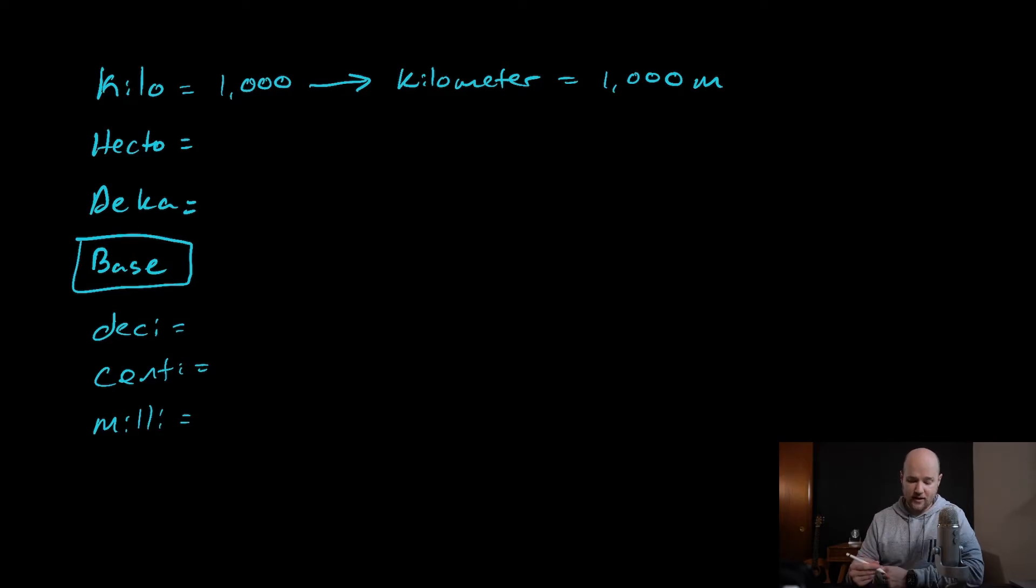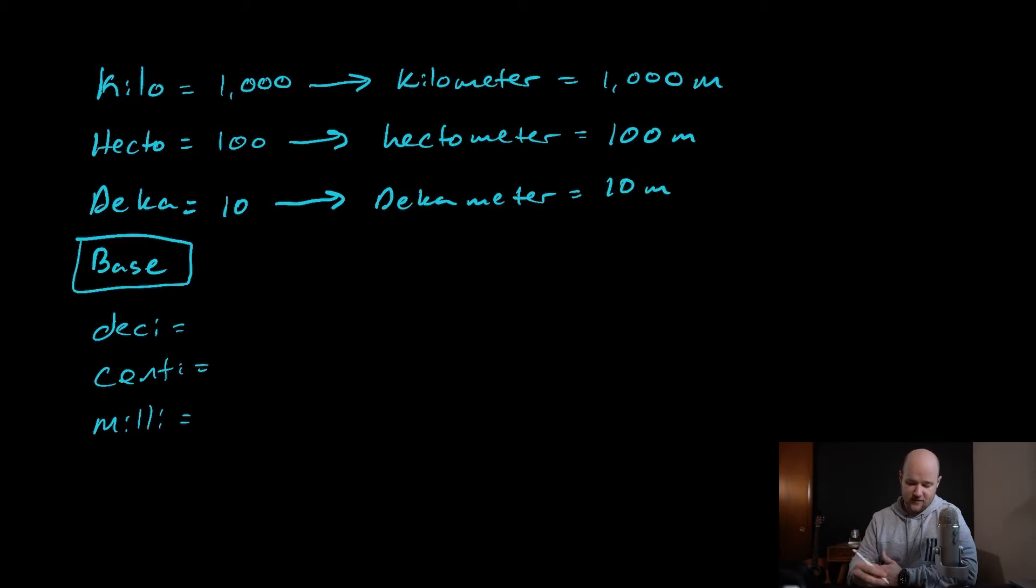And these prefixes actually go beyond just what I'm showing you, but I'm just going to show you this for right now. Now hecto means 100, so if you were to say you had a hectometer, that means you have 100 meters. In deca, the prefix is 10, so if you had a decameter, that means you have 10 meters. And for the purpose of this example, the base unit is just the meter. Now it could be the gram or it could be the second, but for this example we're just sticking with meter.